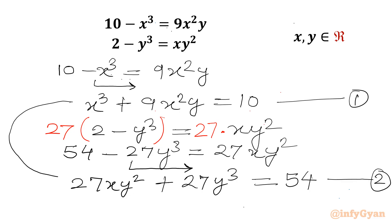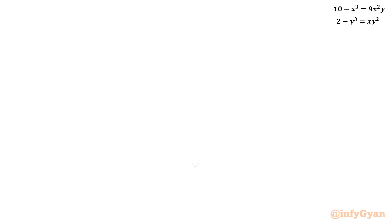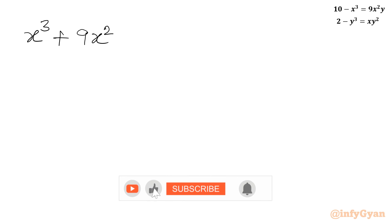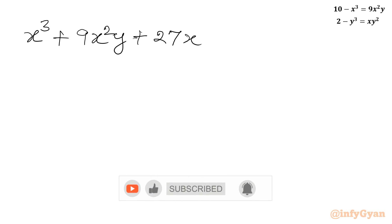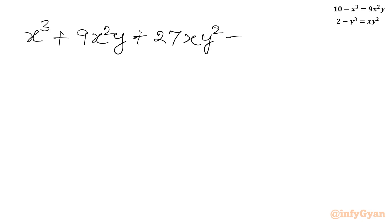Now we will add these two equations — equation 1 plus equation 2. We get: x³ plus 9x²y plus 27xy² plus 27y³ equals 10 plus 54, which is 64.